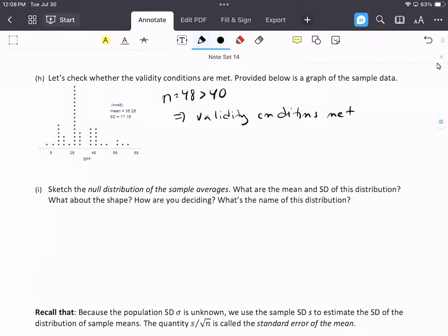Sketch the null distribution of the sample averages. Remember, if I sampled another intro stats class of 48, do you think I would get exactly the same average? Or do samples vary? Hopefully you think, right, samples vary. So this is the null distribution of those sample averages.